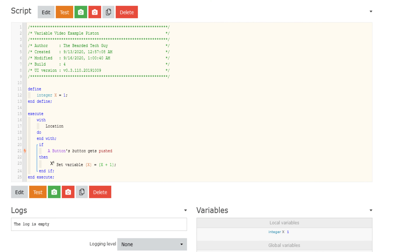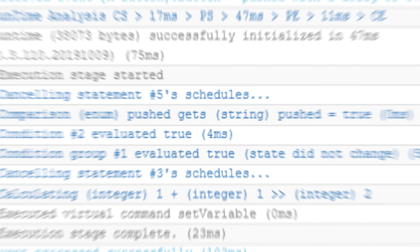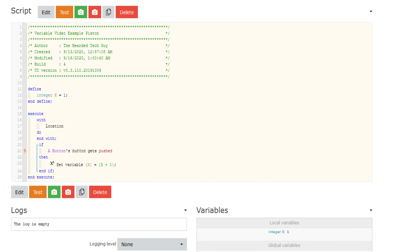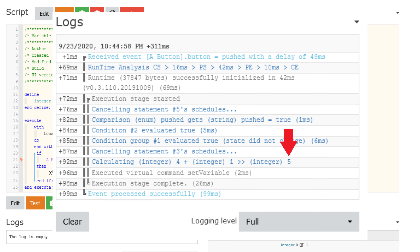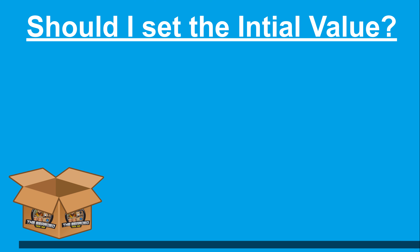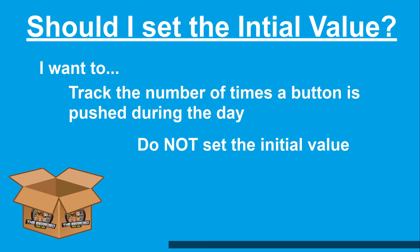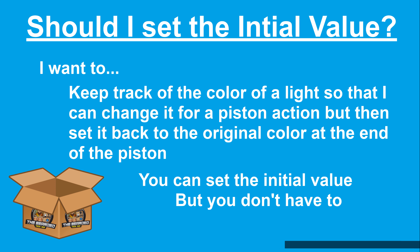For example, in this example piston, the variable is set with an initial value of 1. The piston executes because the button was pushed, and 1 is added to the variable. If the piston runs again, the outcome will be the same with the variable ending with the number 2, because every time the piston runs we are setting the integer to 1. If we do not set an initial value, every time the button is pushed the variable increments by 1. If you are looking to track the state of something — such as the number of times a button is pushed between executions of a piston — then you would not want to set an initial value. Whereas if you only care about the state of something within the execution of that piston, you would set the initial value.